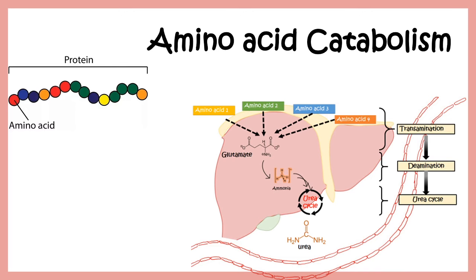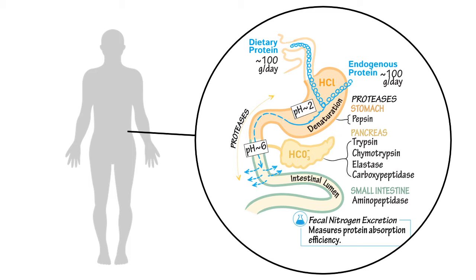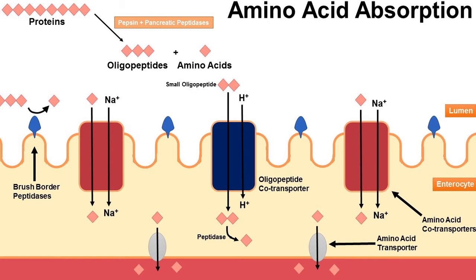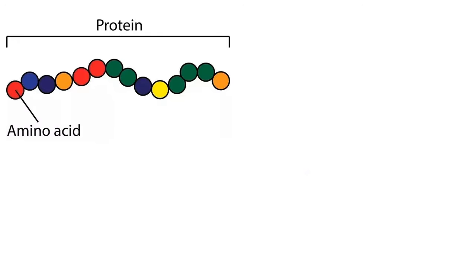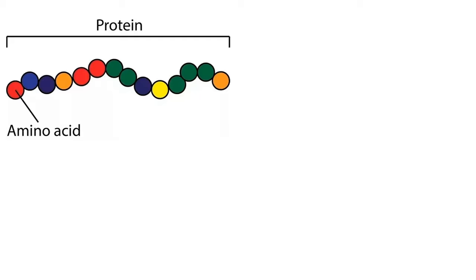Welcome to this video on amino acid catabolism. We'll get an overview of how protein is broken down to amino acids, and how these amino acids are broken down to nitrogen and excreted. In our stomach and intestine, enzymes such as trypsin, chymotrypsin, carboxypeptidase, and pepsin degrade proteins into amino acids, which are absorbed in the intestinal epithelial cells and move into the blood to make muscle proteins or other components.